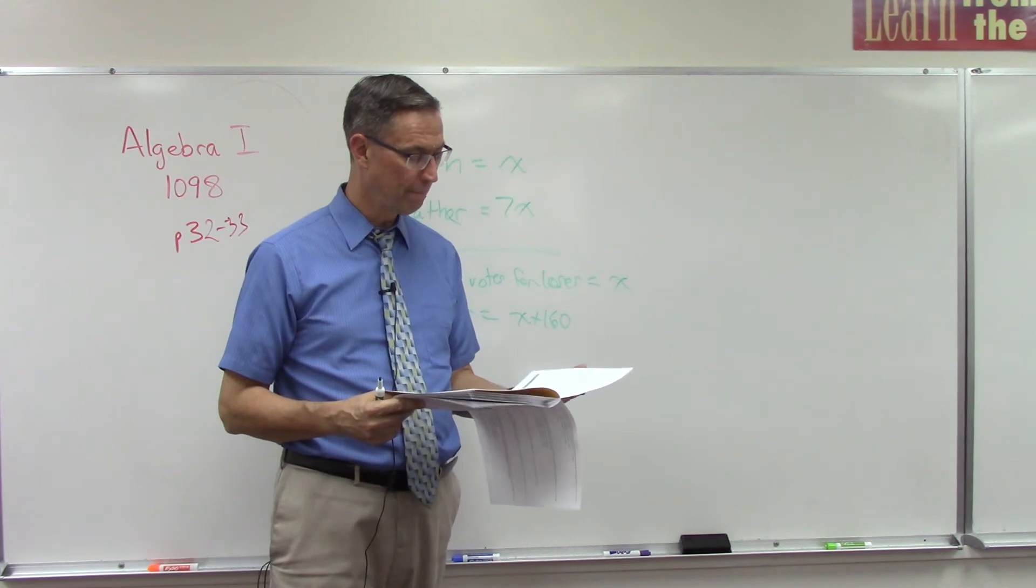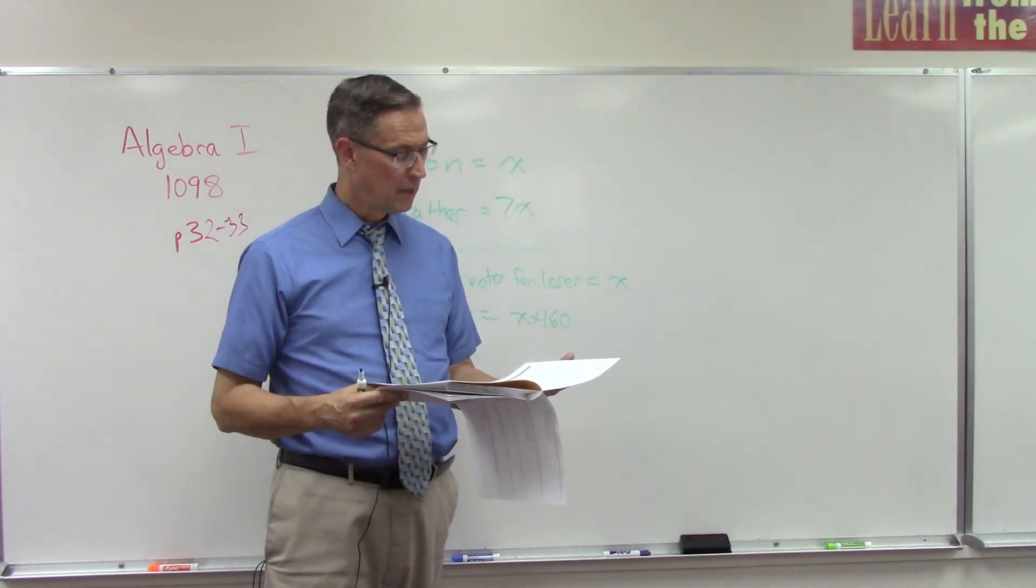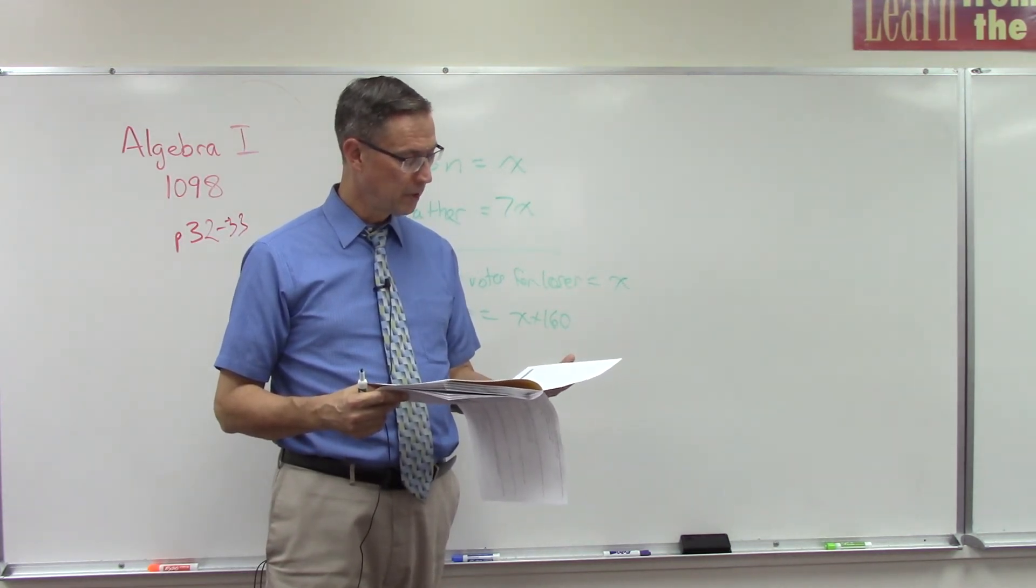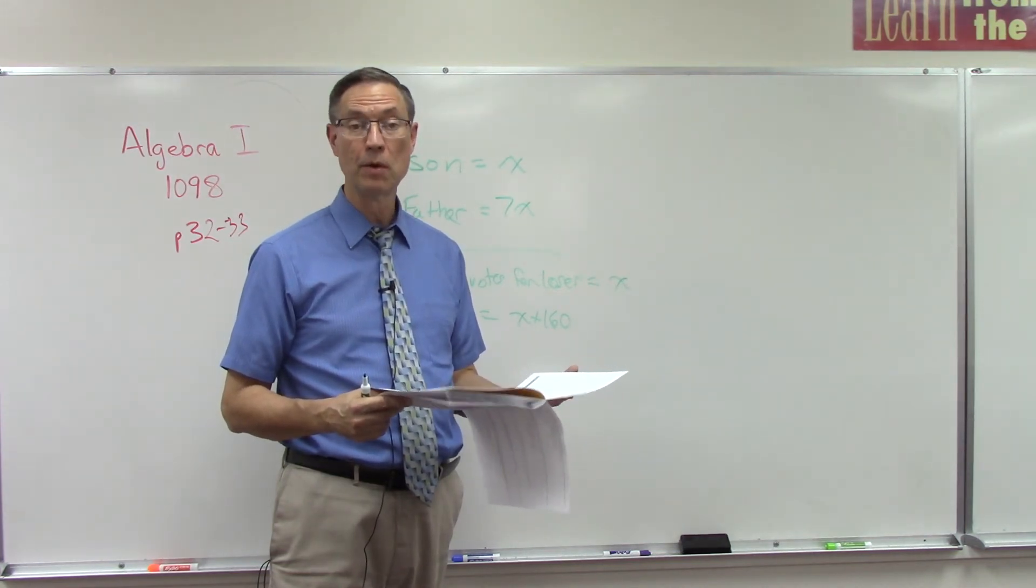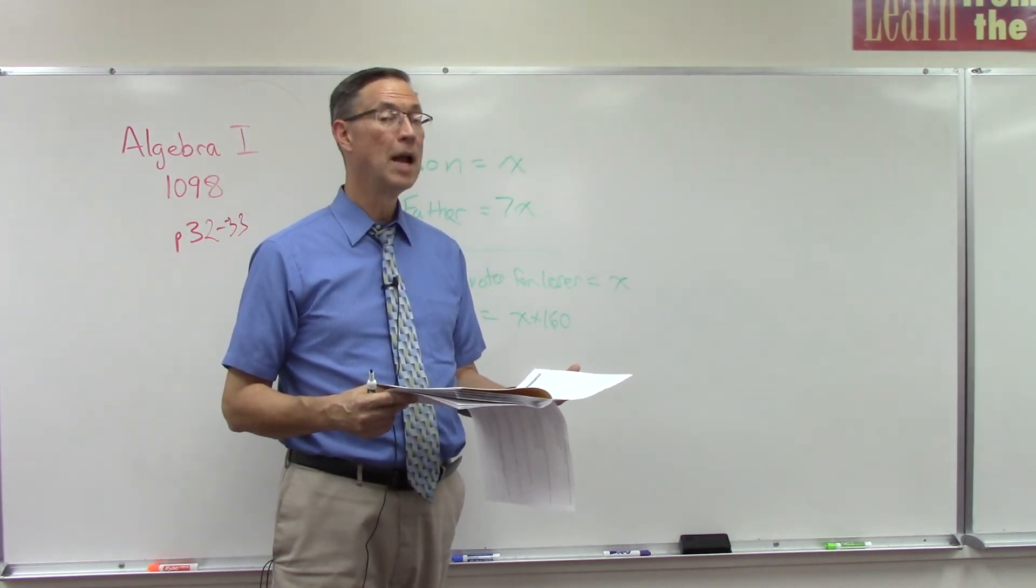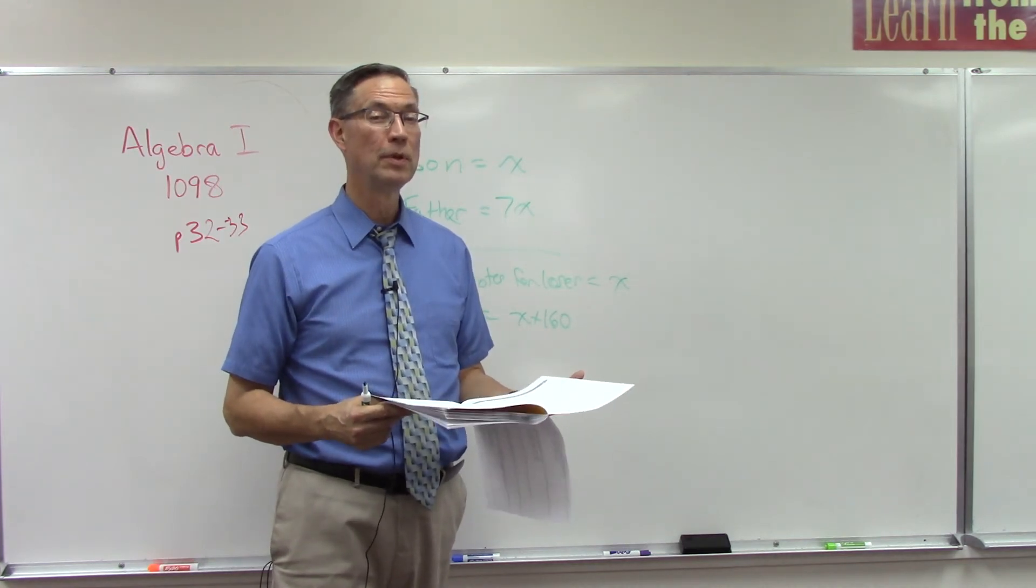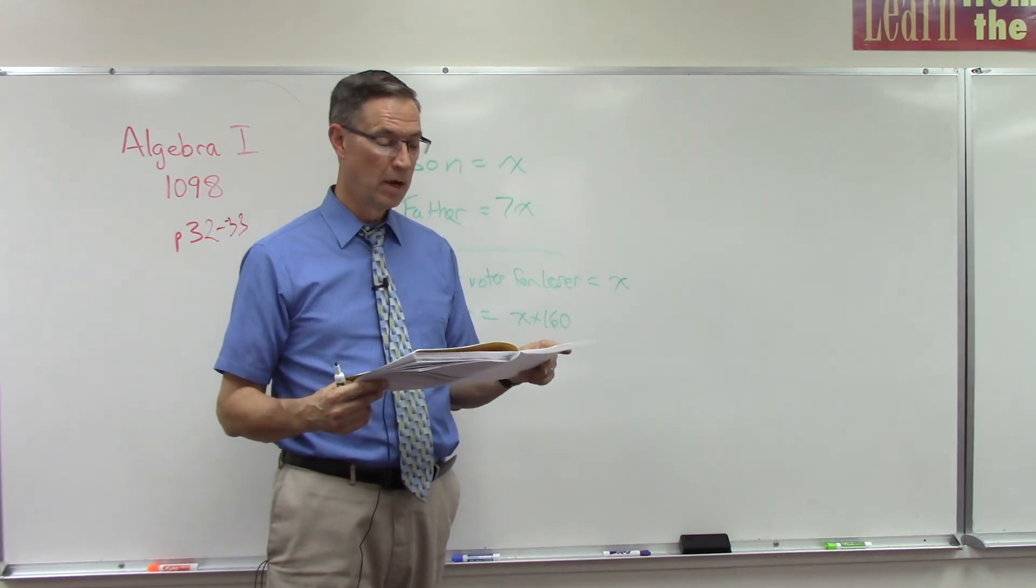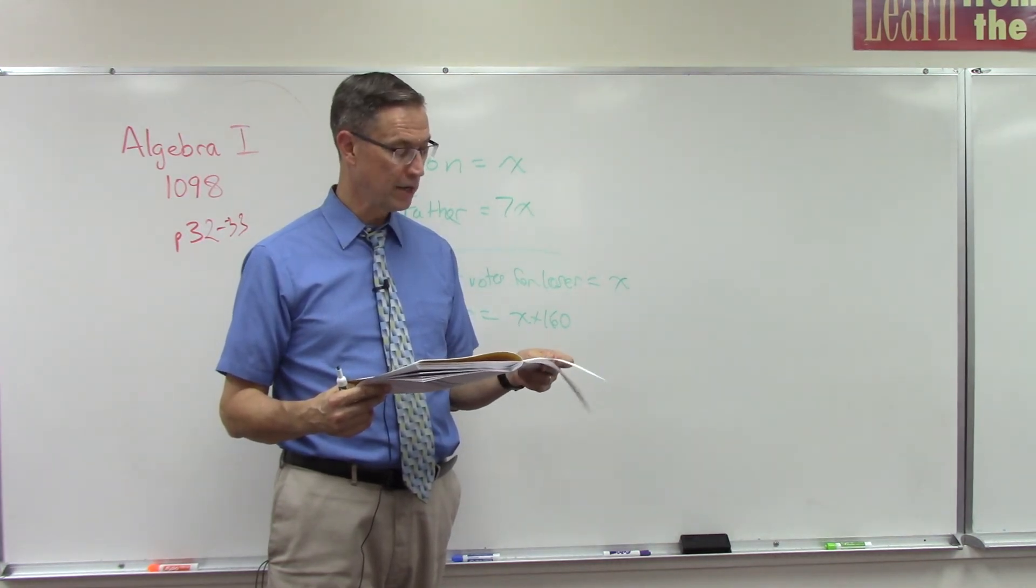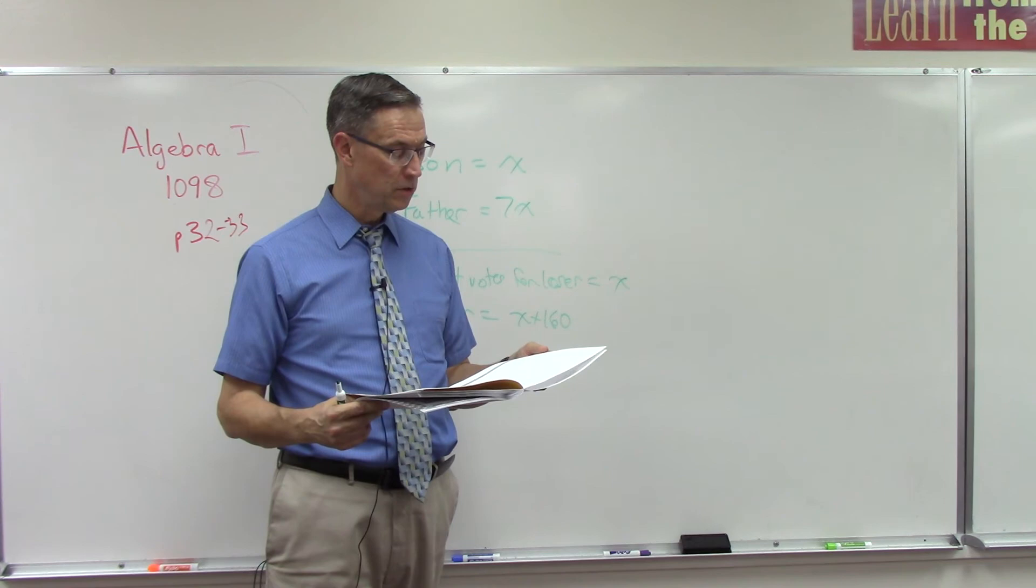Looking at the checkup, number nine - you did some problems like that where you figure out what the denominator is, the least common multiple of the denominators. Just multiply everything through so that you totally get rid of the fractions - that makes it easier. Do the same thing on number ten.